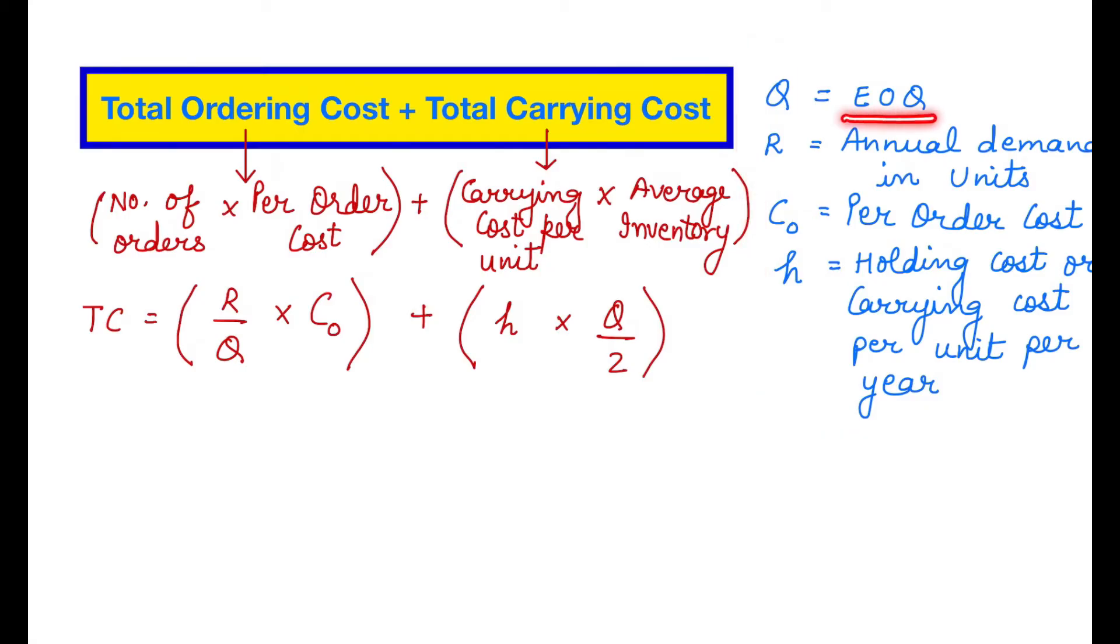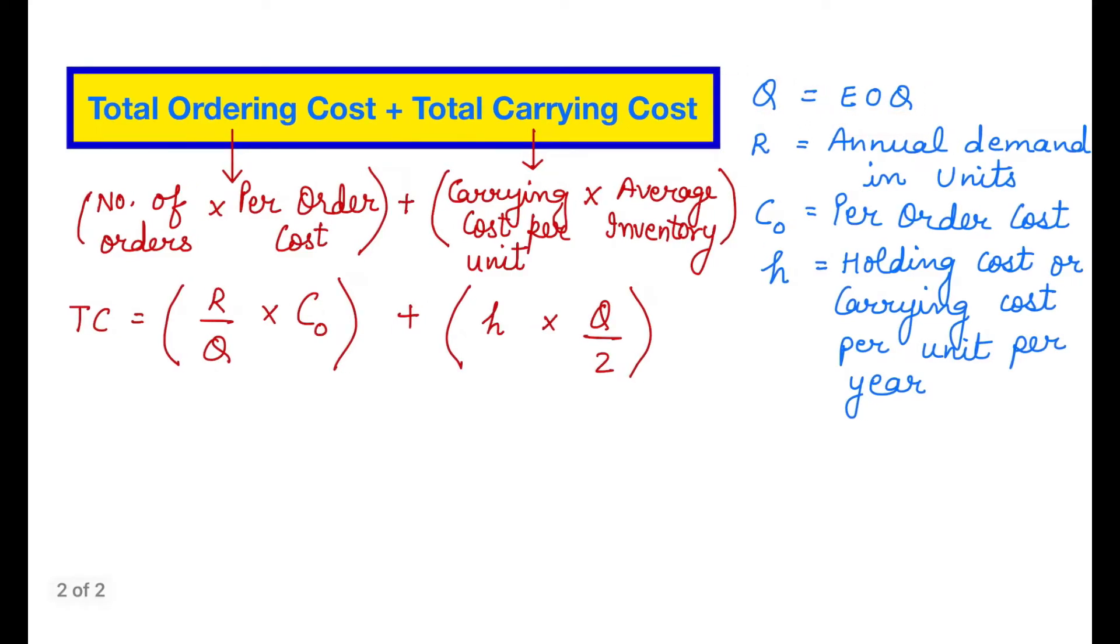Let us discuss the abbreviations used for them. For economic order quantity we will be using Q. For annual demand in units or annual requirement in units throughout the year, we will be using R. Then the cost of placing one order will be represented by CO, and the holding cost or the carrying cost per unit per year will be determined by H.